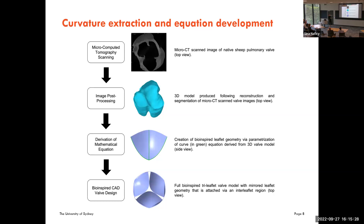This slide describes our novel methodology for extracting natural curvature from leaflets and incorporating it into our bio-inspired valve design. This figure is from a recent paper we submitted. We start with a micro-CT scan of a real heart valve — in this case a sheep valve — and reconstruct and segment it into a 3D model.